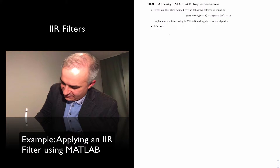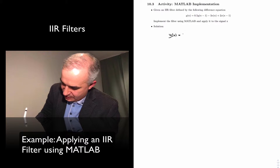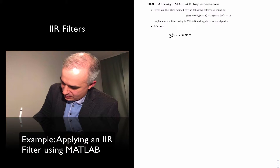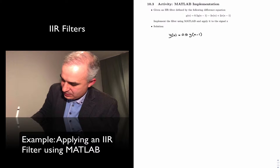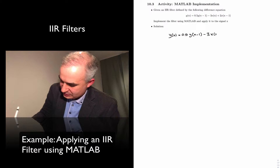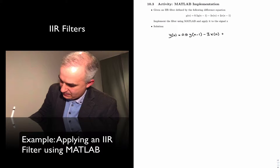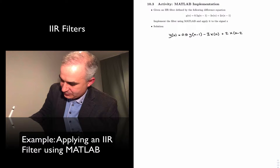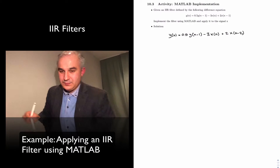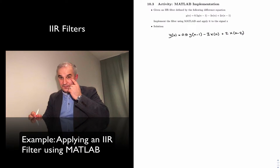We have y[n] equals 0.5 y[n-1] minus 3 x[n] plus 2 x[n-2]. So, this is a difference equation.